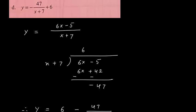For division, this 6x we divide by x and we see 6 remaining. So my quotient is 6. Then 6 will multiply with x plus 7, it will give me 6x plus 42. Then I will subtract it. After subtraction, I get minus 47.